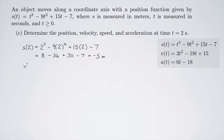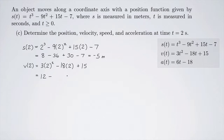For the velocity at t equals 2, v of 2 equals 3 times 2 squared minus 18 times 2 plus 15. That's 12 minus 36 plus 15, which equals negative 9 meters per second.